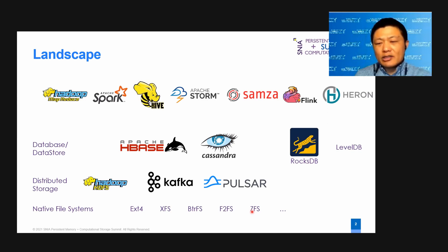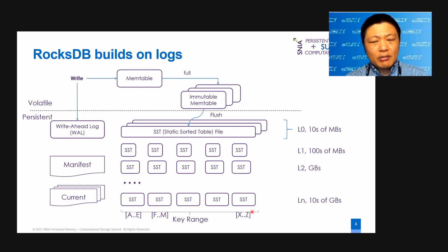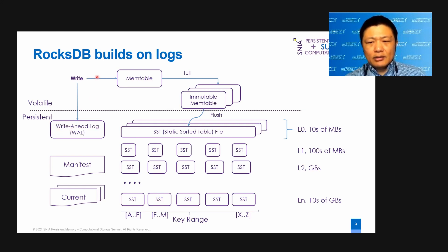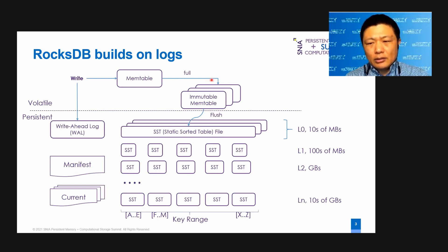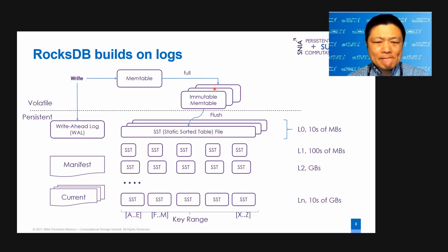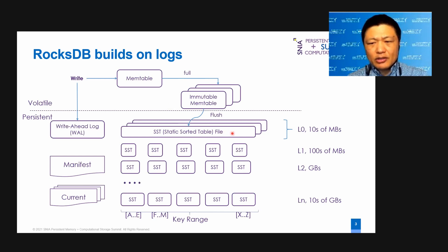Let's take a popular RocksDB and dive into details. I'm going to focus on the write flow. For every write, RocksDB first puts the data onto a write-ahead log, and also stores it in the volatile MEM table. When the MEM table becomes full, it will become the immutable MEM table waiting to be flushed onto persistent media. The flushed data will be stored in SST files — static sorted table files. Those files are referred to as L0 SST files, typically around 10 megabytes.